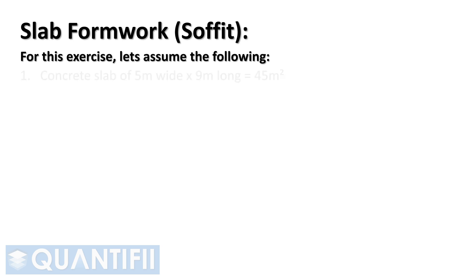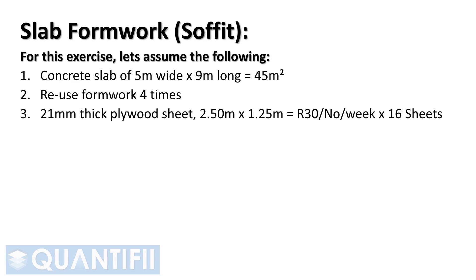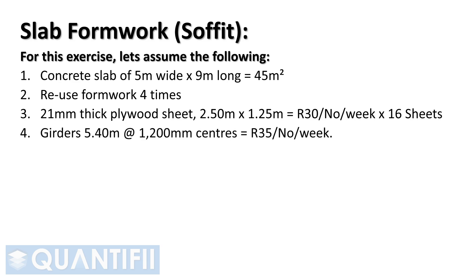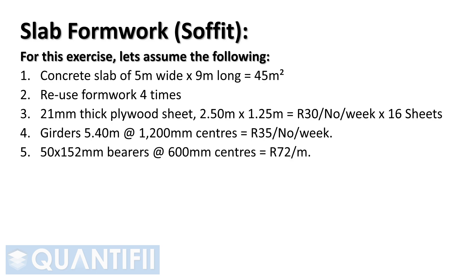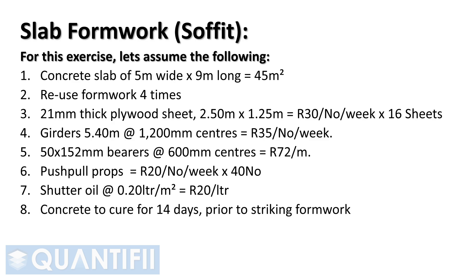Next, let's work through the steps of pricing slab soffit formwork. We assume a concrete slab of 5 m wide × 9 m long = 45 m², reusing formwork four times. 21 mm thick plywood sheets, 2.5 m × 1.25 m, hired at 30 Rand per sheet per week. Four sheets cover the 5 m width; the 9 m length requires 3.6 sheets rounded up to four — 16 sheets total. Girders are 5.4 m long at 1.2 m centers at 35 Rand per week per girder. 50 × 152 mm bearers at 600 mm centers at 72 Rand per meter. 40 push-pull props at 20 Rand per prop per week. Shutter oil at 0.20 L/m² at 20 Rand per liter. Concrete to cure for 14 days prior to striking formwork.